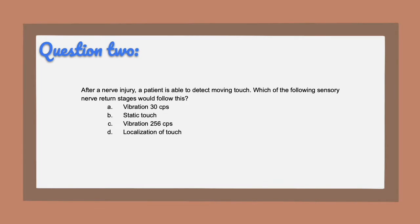Question two: after a nerve injury, a patient is able to detect moving touch. Which of the following sensory nerve return stages would follow this? A, vibration 30 CPS. B, static touch. C, vibration 256 CPS. Or D, localization of touch.